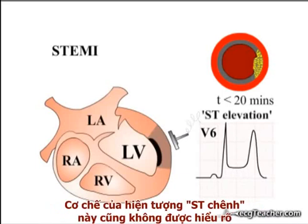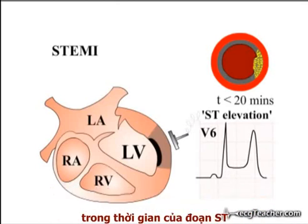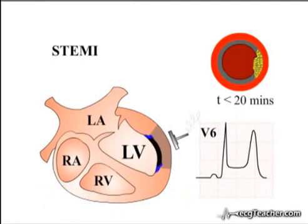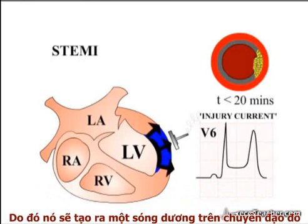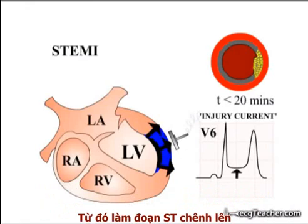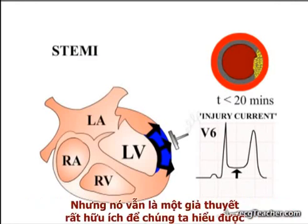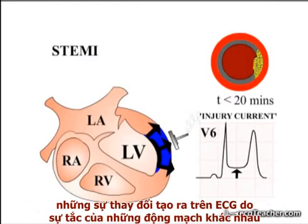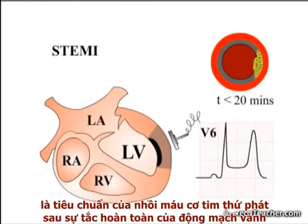The mechanism underlying this ST elevation is poorly understood. It may be due to abnormal currents generated between normal and ischemic tissue during the time period of the ST segment. This so-called injury current moving towards the leads overlying the damaged region of myocardium would be expected to produce a positive deflection in their readouts, raising the ST segments. Although the role of an injury current in generating ST elevation is controversial, it is a very useful concept when trying to understand the patterns of changes produced on the ECG by occlusion of different vessels. ST segment elevation on an ECG is the hallmark of evolving myocardial infarction secondary to complete occlusion of a coronary arterial vessel.